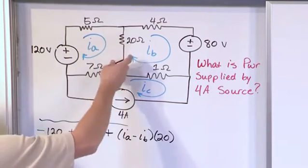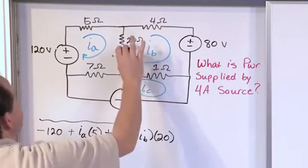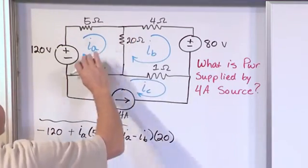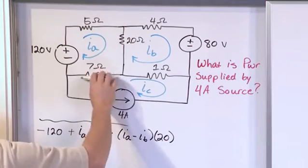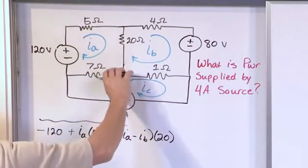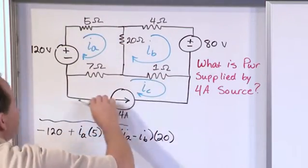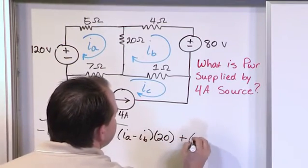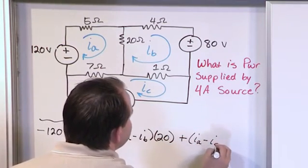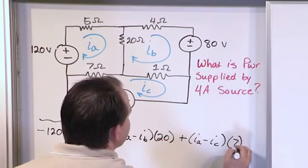Now when we get down to the 7 ohm resistor, again, we assume that we're going to hit a voltage drop like this, which means the current really is going this way, which means it really needs to be IA minus IC, which is fighting it. So it's IA minus IC times 7 ohms.